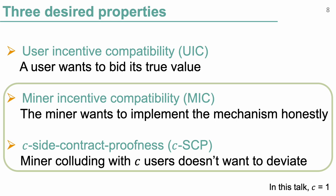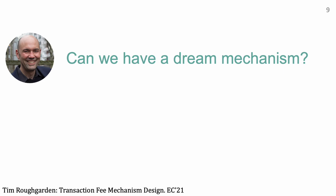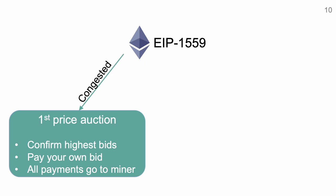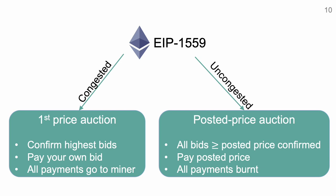Now that we have outlined the desired properties, Tim Roughgarden asked in his EC'21 work: can we have a dream transaction fee mechanism? The closest we have come to is Ethereum's EIP-1559, rolled out just last year. EIP-1559 switches between two modes of operation. When the network is congested, it approximates a first-price auction, which as mentioned is not good. When the network is uncongested, it approximates a simple posted price auction, where there is a take-it-or-leave-it offer called the posted price. If you bid at least the posted price, you are confirmed and pay the posted price; otherwise you are not confirmed. All payments are burned.